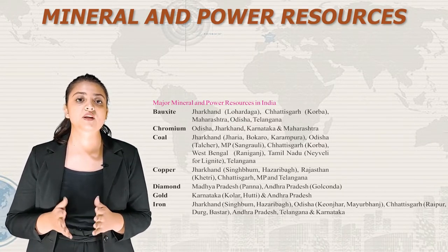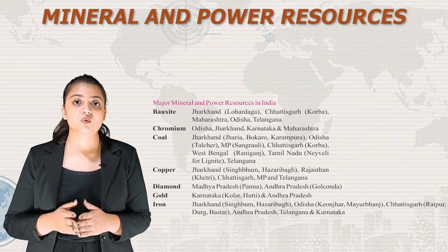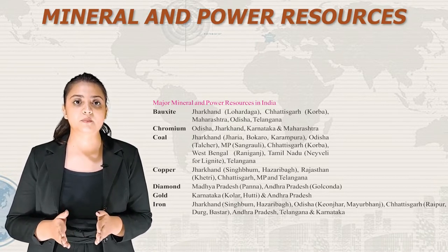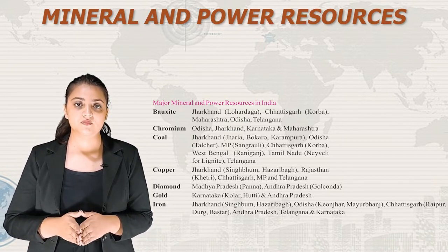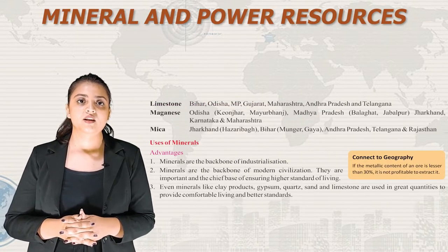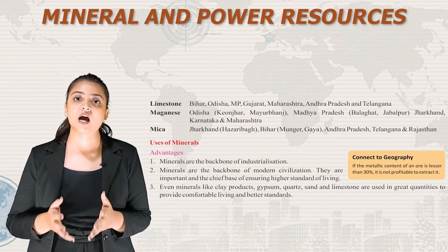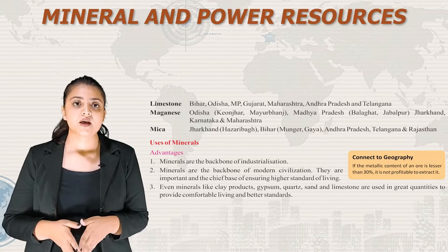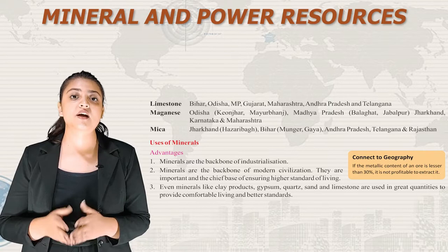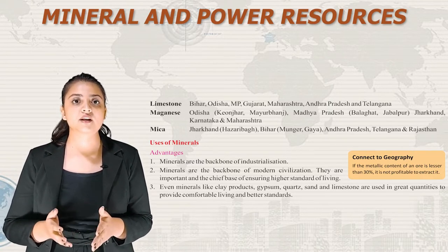Iron is found in Singhbhum and Hazaribagh regions of Jharkhand; Keonjhar and Mayurbhanj region of Odisha; Raipur, Durg and Bastar regions of Chhattisgarh; and in Andhra Pradesh, Telangana and Karnataka. Limestone is found in Bihar, Odisha, Madhya Pradesh, Gujarat, Maharashtra, Andhra Pradesh and Telangana. Manganese is found in Keonjhar and Mayurbhanj of Odisha; Balaghat and Jabalpur of Madhya Pradesh; and in Jharkhand, Karnataka and Maharashtra.